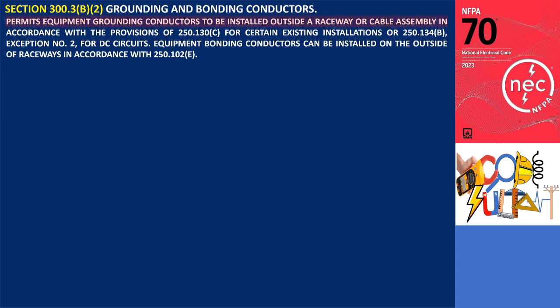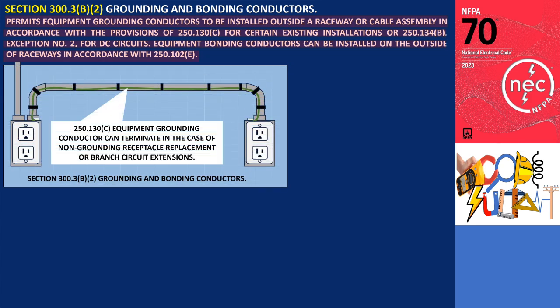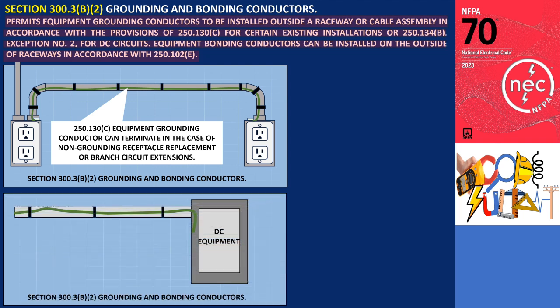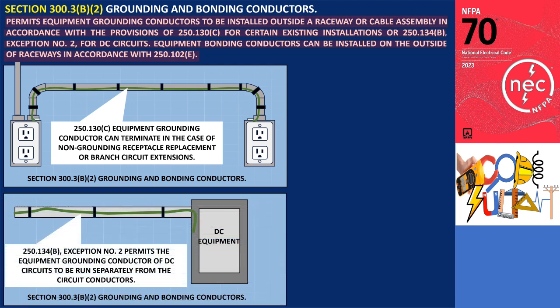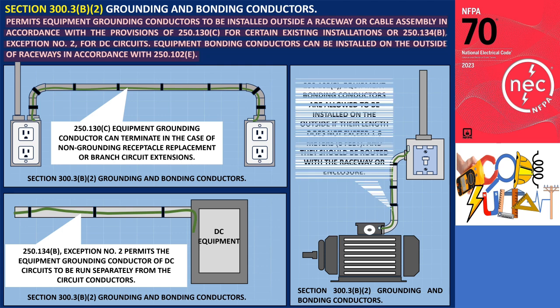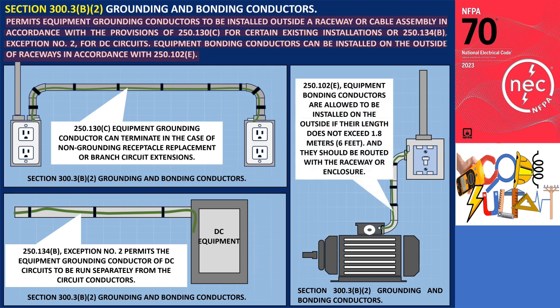Section 300.3b.2 permits equipment grounding conductors to be installed outside a raceway or cable assembly in accordance with the provisions of 250.130.c for certain existing installations, or 250.134.b Exception No. 2 for DC circuits. Equipment bonding conductors can be installed on the outside of raceways in accordance with 250.102.e. Section 250.130.c specifies where an equipment grounding conductor can terminate in the case of non-grounding receptacle replacement or branch circuit extensions. Section 250.134.b Exception No. 2 permits the equipment grounding conductor of DC circuits to be run separately from the circuit conductors. Section 250.102.e states that if equipment bonding conductors are installed on the outside, their length should not exceed 1.8 meters (6 feet) and they should be routed with the raceway or enclosure.